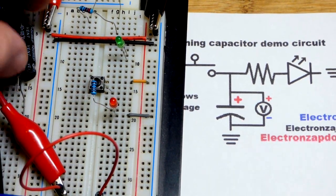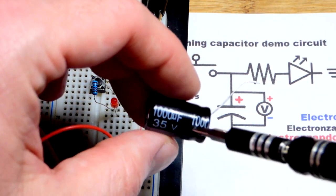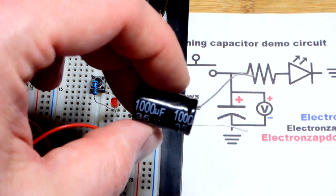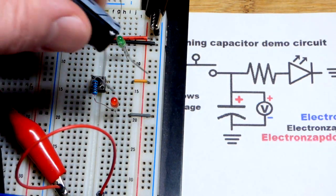I'm going to use an electrolytic one. This is a 1,000 microfarad capacitor, can be charged up to about 35 volts. So this is a large value capacitor for basic electronics.